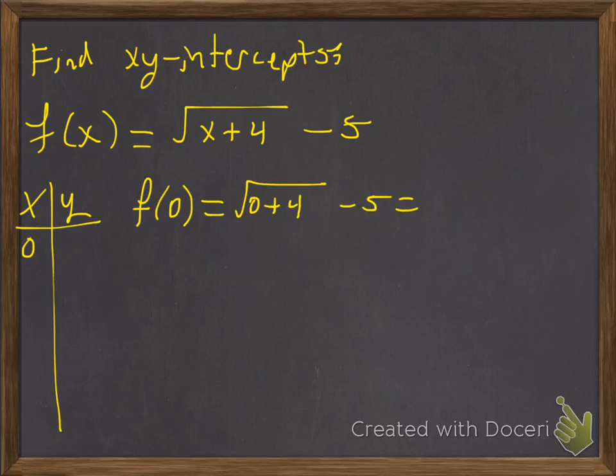So 0 plus 4 will be 4, and then we take the square root of that. That's going to be 2. So 2 minus 5 is negative 3. So there is your y intercept.